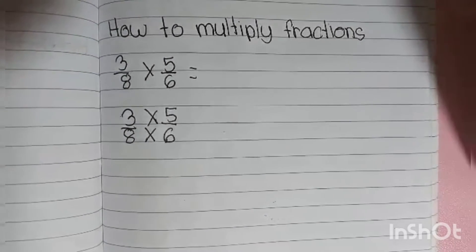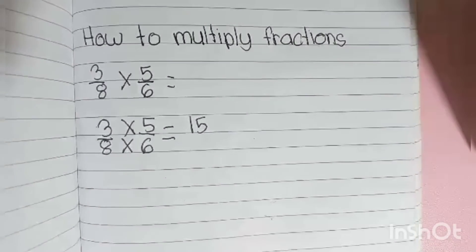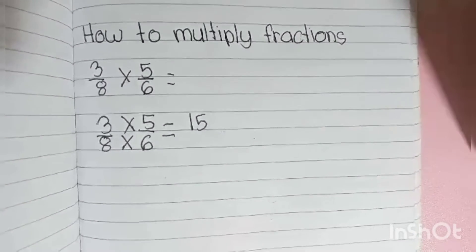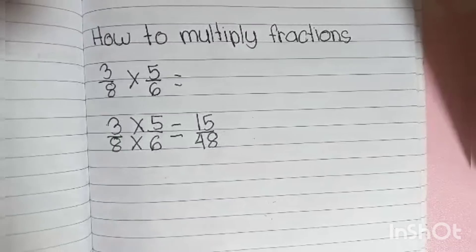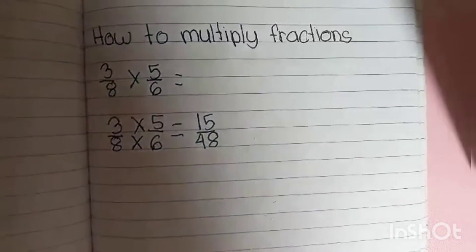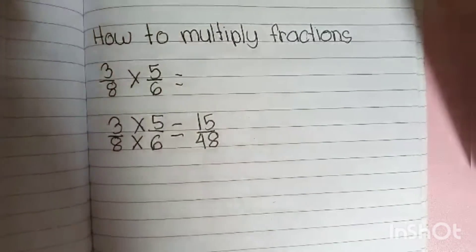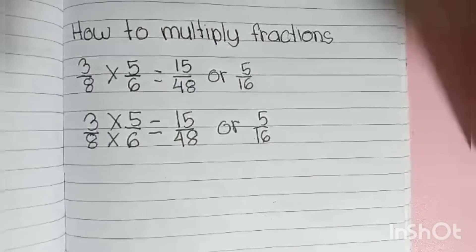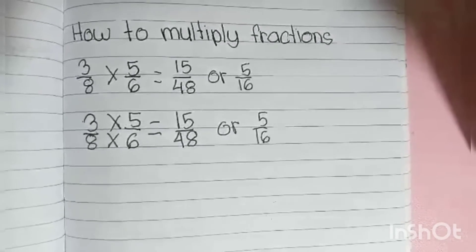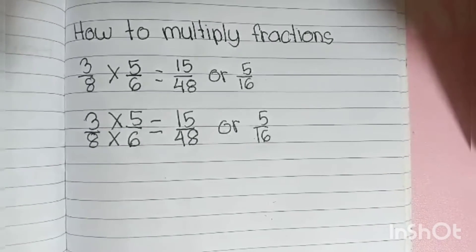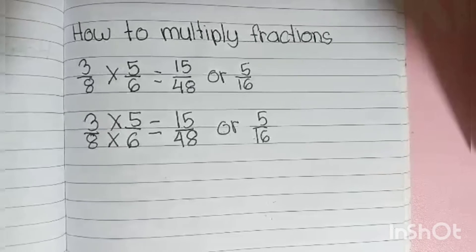So 3 times 5 is 15, and 8 times 6 is 48. Then lastly, we have to put it in lowest terms, which is 5 over 16. So 3/8 times 5/6 equals 15/48, or 5/16.